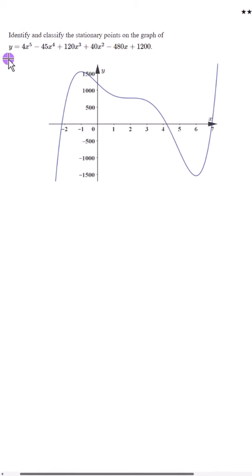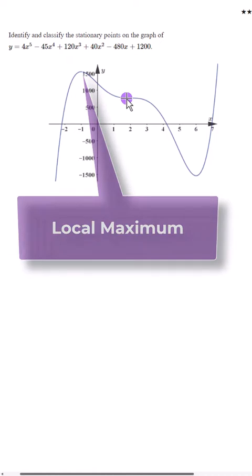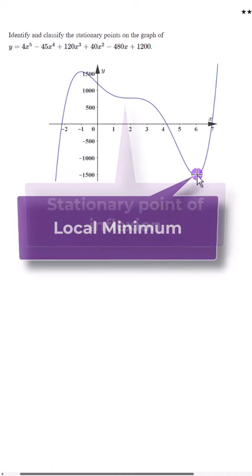In this video we're going to use our Casio FXCG50 to find the stationary points of this graph of y equals 4x to the 5 and so on. We're going to try and find the local maximum, the stationary point of inflection, and the local minimum.